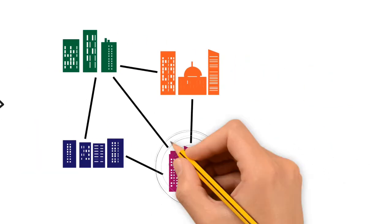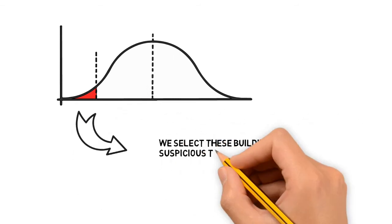Then, we observe the distribution of the amount of money declared in each group, and we mark as under-reporting the constructions within the lower tail of the distribution.